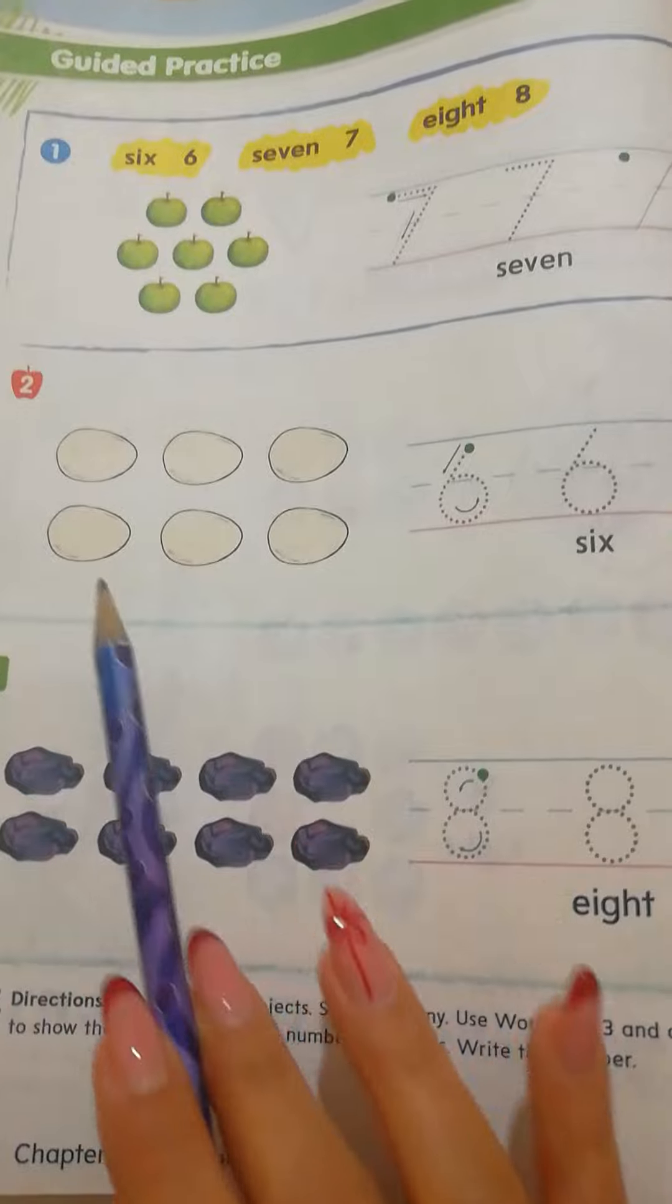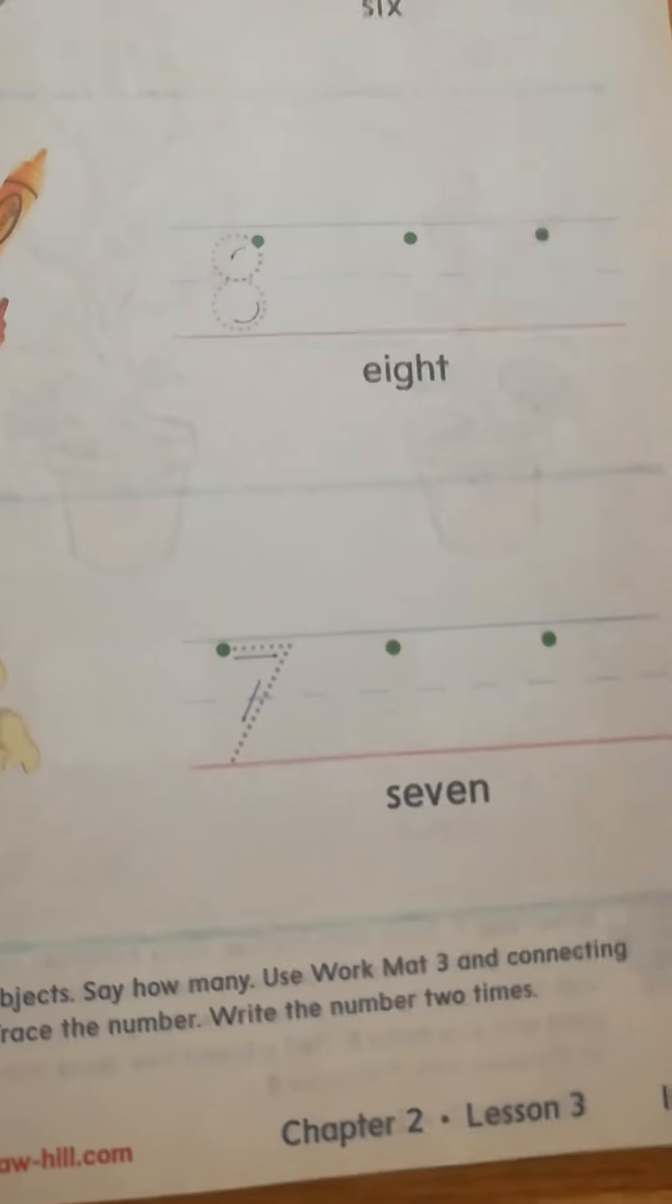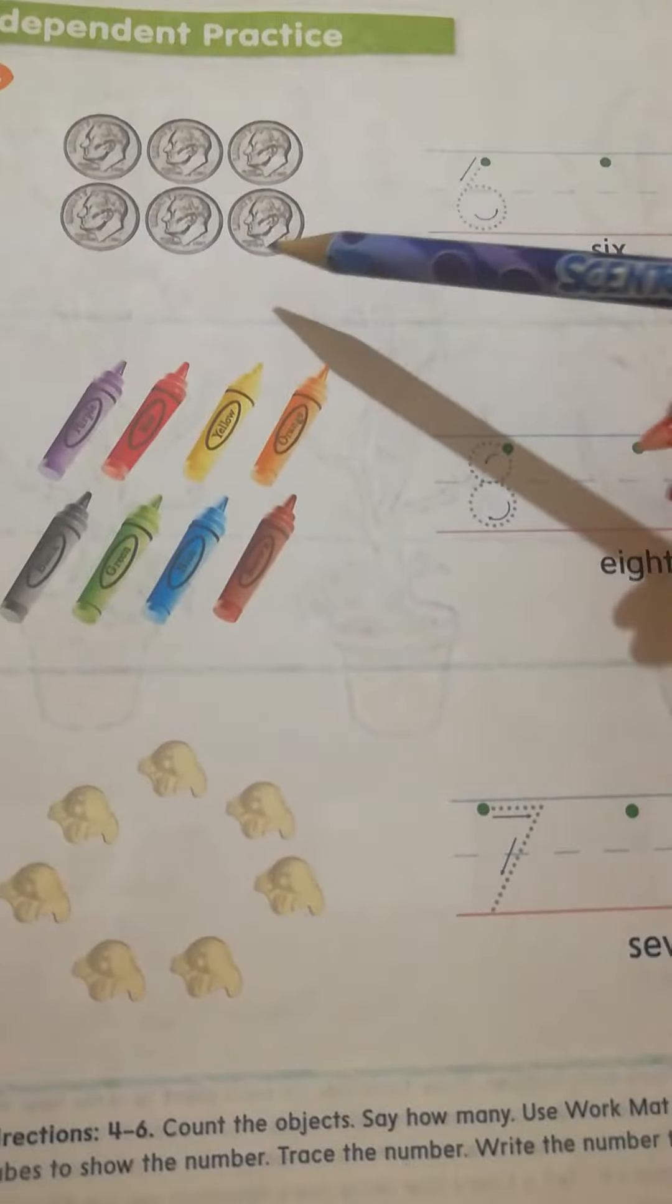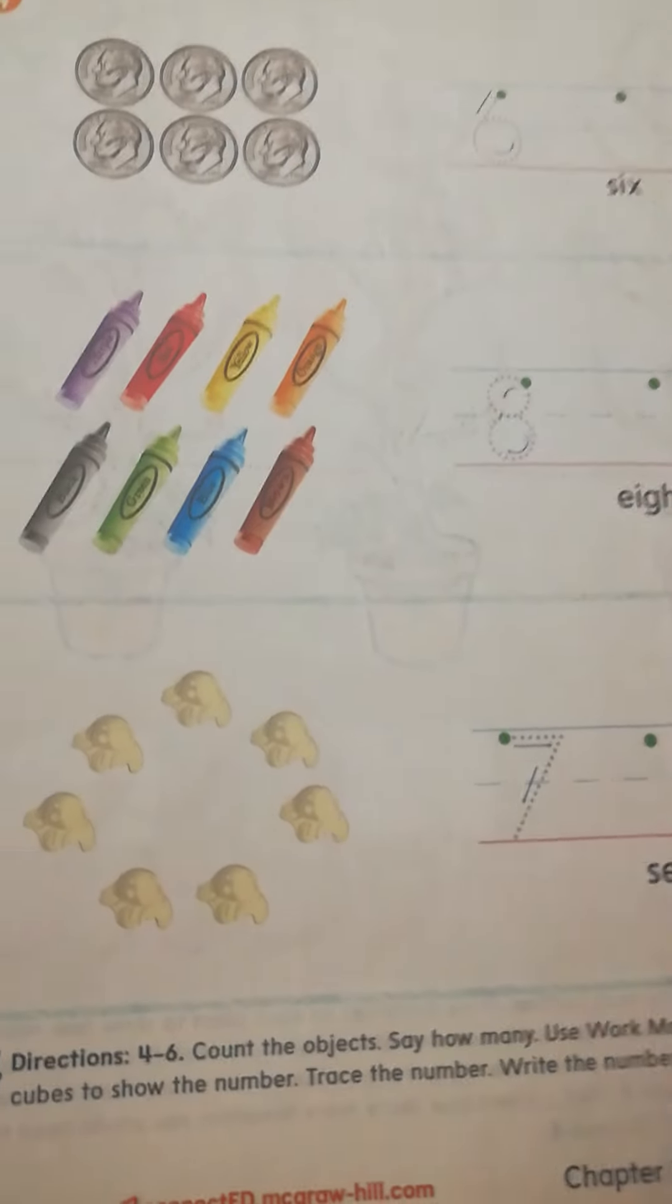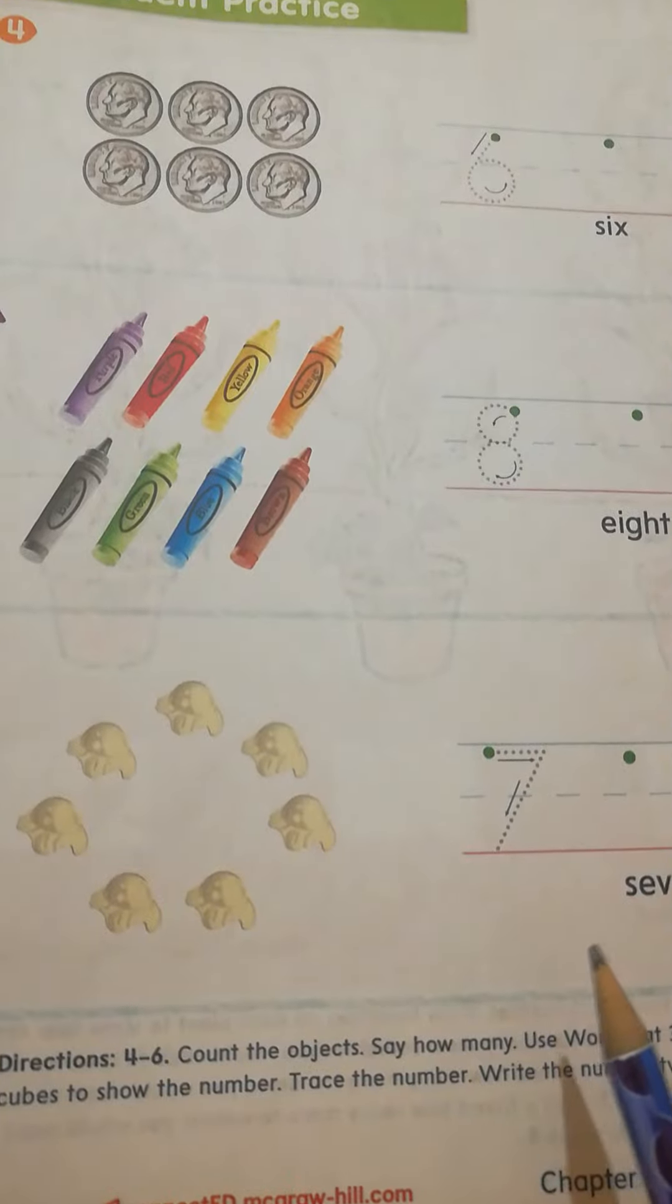Here we count, write the number. Count, write the number. Then we move to page 107. We do the same. We count each group, write the number. And here as well. Continue doing them all, count and write the numbers. Thank you.